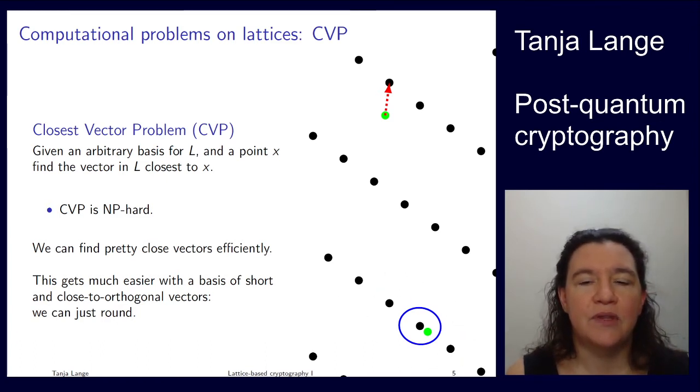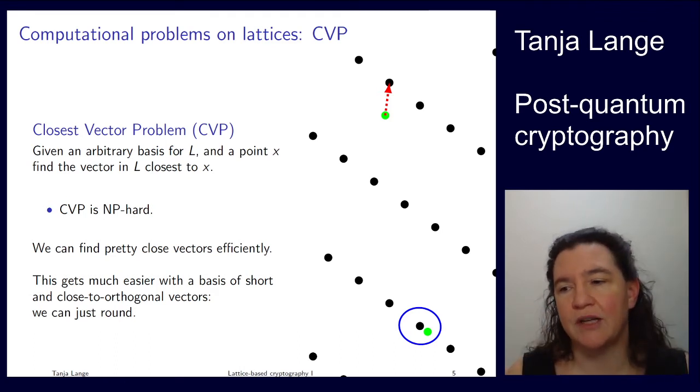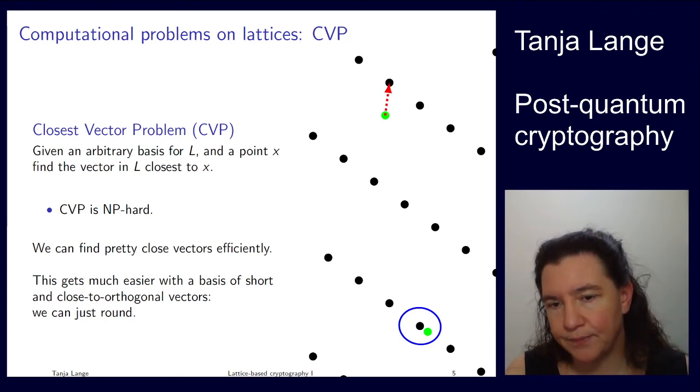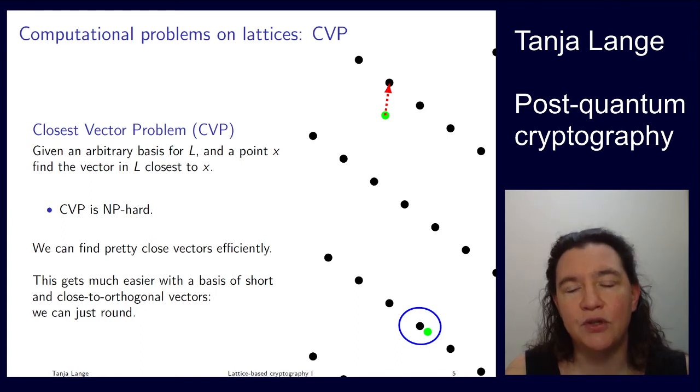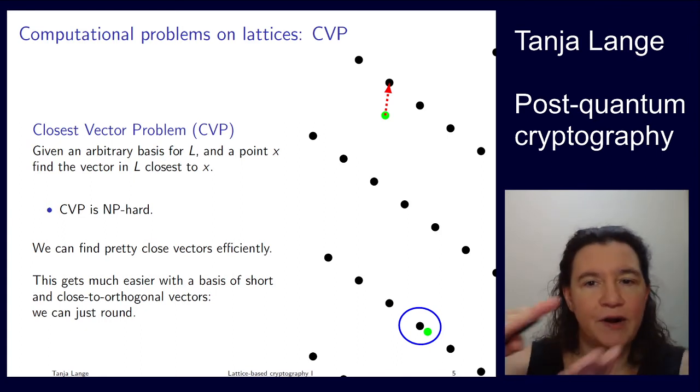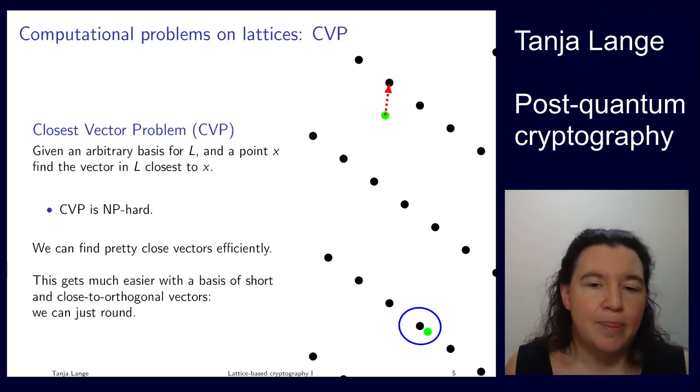If we have a nice basis, which is close to orthogonal, which has short vectors, then we can basically just project or round to the closest in each of the directions, each of the coordinates, and get something good. If you have a very skewed basis, think of these very long vectors in blue on the first slide, then we probably don't get the right vectors.